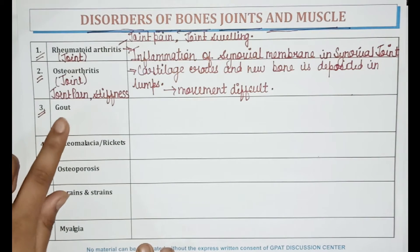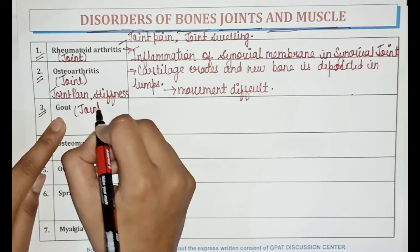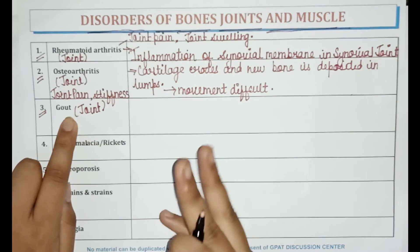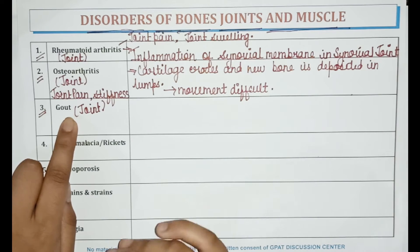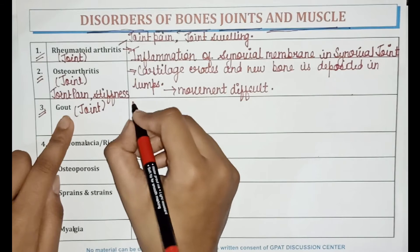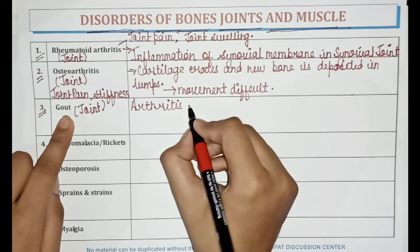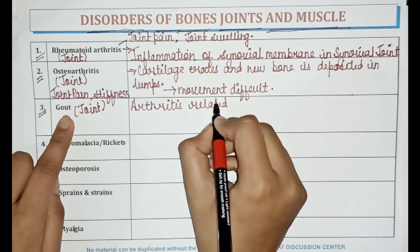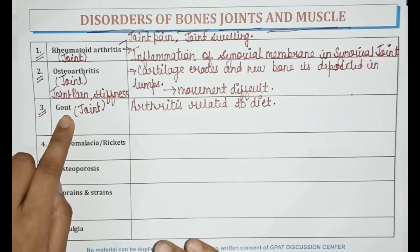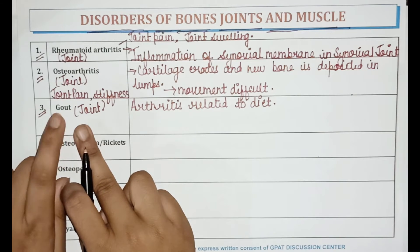The next one is gout. Gout is basically a joint disorder. It is a disease that causes painful swelling in the place where two bones fit together, especially of the toes, knees and fingers. It is a kind of arthritis related to diet. In gout, there is deposition of uric acid crystals in synovial joints.